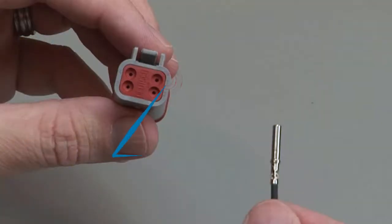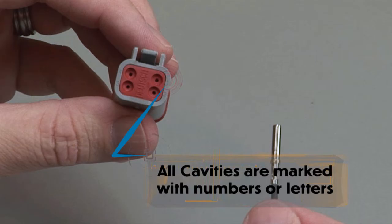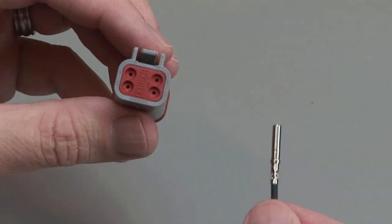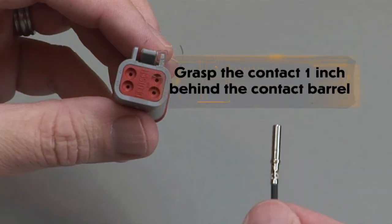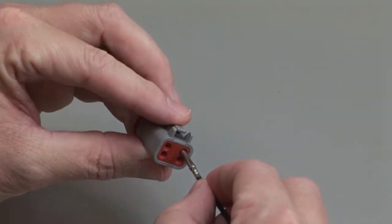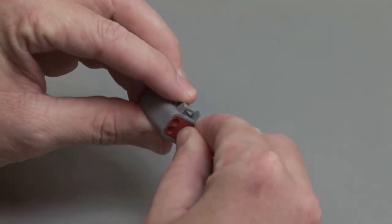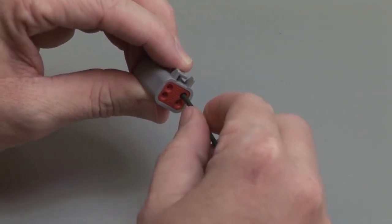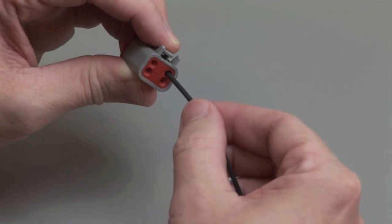All cavities are marked with numbers or letters. Grasp the crimped contact approximately 1 inch behind the contact barrel. Hold the connector with the rear grommet facing you. Push the contact straight into the rear grommet until you hear and feel a click. A slight tug will confirm that the contact is properly locked into place.